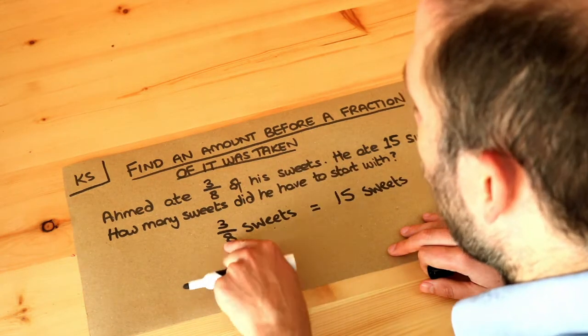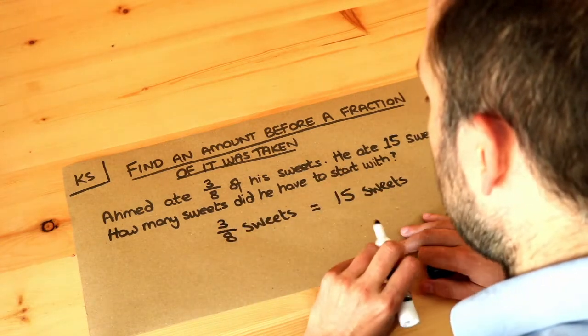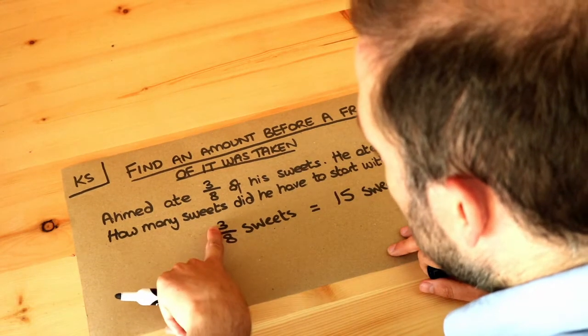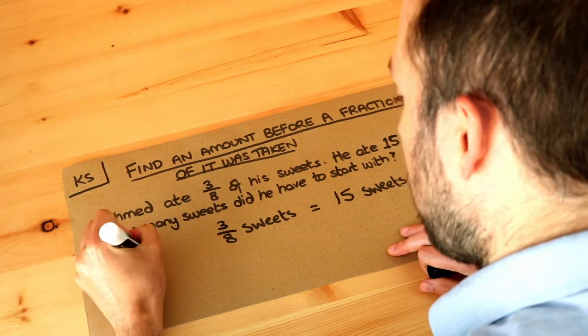And we need to work out what all of his sweets were. So if three eighths of his sweets were fifteen we can make the top of this fraction one first. So let me write that down. Make the numerator one first.